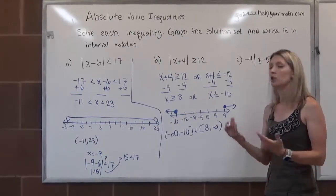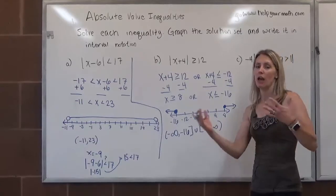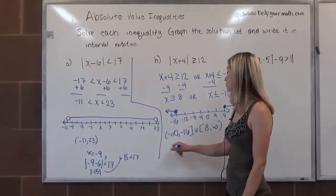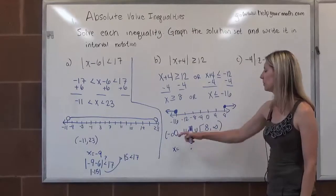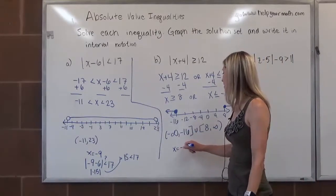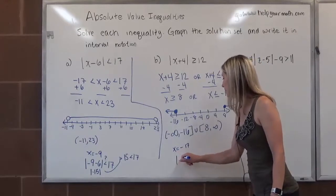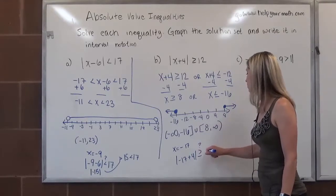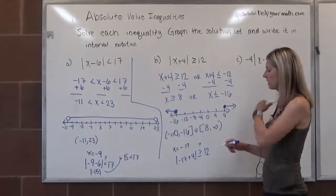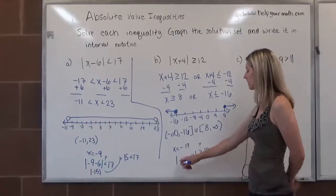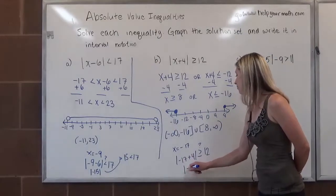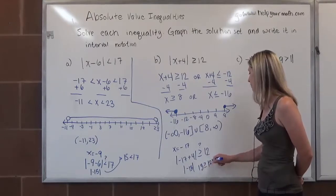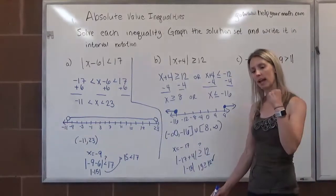Again, if you want to, you can use the test point method just to make sure that you at least have one correct solution. That's an optional step for you to take. If you want to do the test point method, maybe we check, what's something that's in between negative infinity and negative 16? How about negative 17? So does the absolute value of negative 17 plus 4 really equal greater than or equal to 12? And we put that question mark because everybody makes mistakes. Negative 17 plus 4 is negative 13. The absolute value of negative 13 is 13, and 13 is greater than or equal to 12, so at least we found one single solution. Yay! Go us!